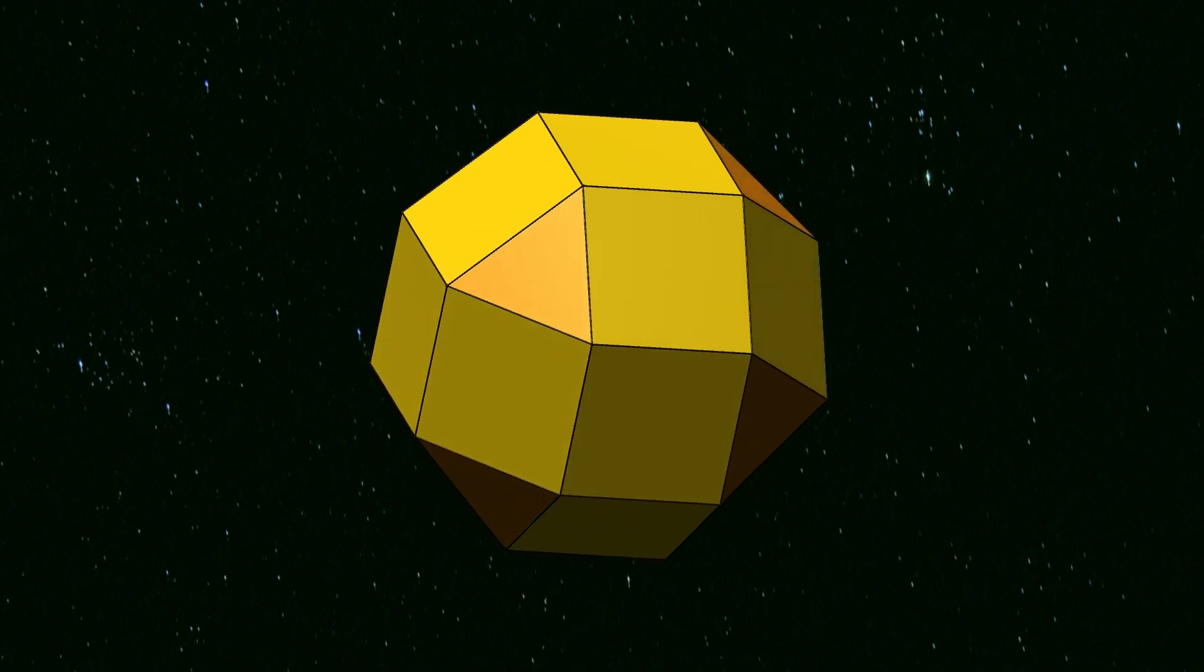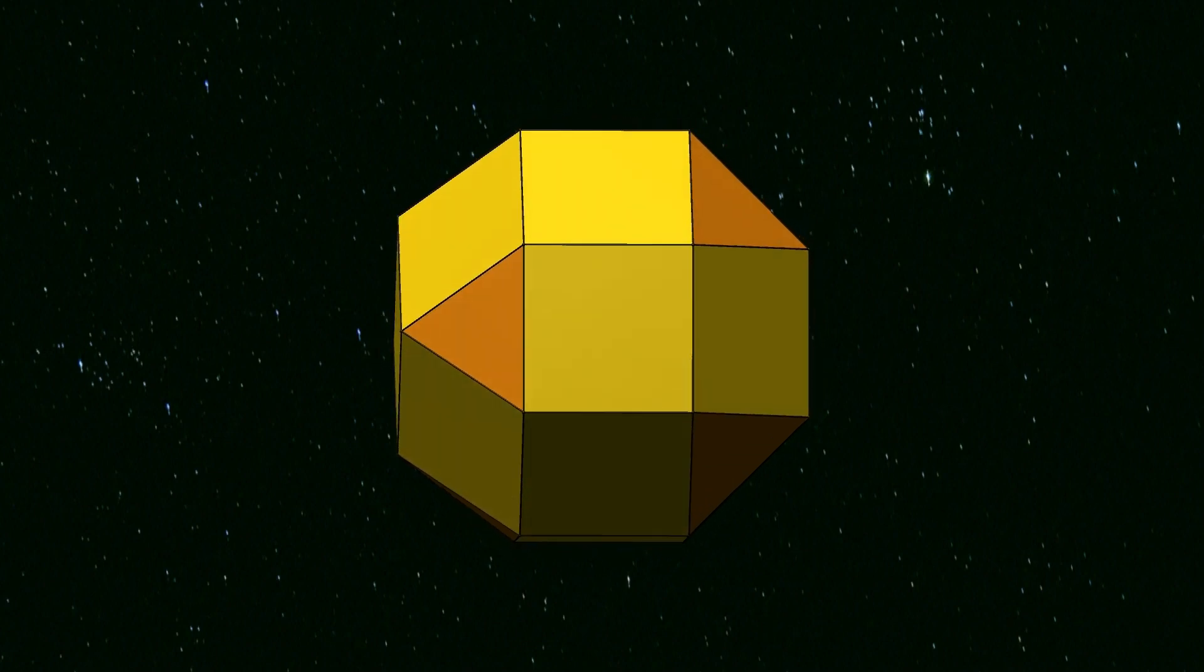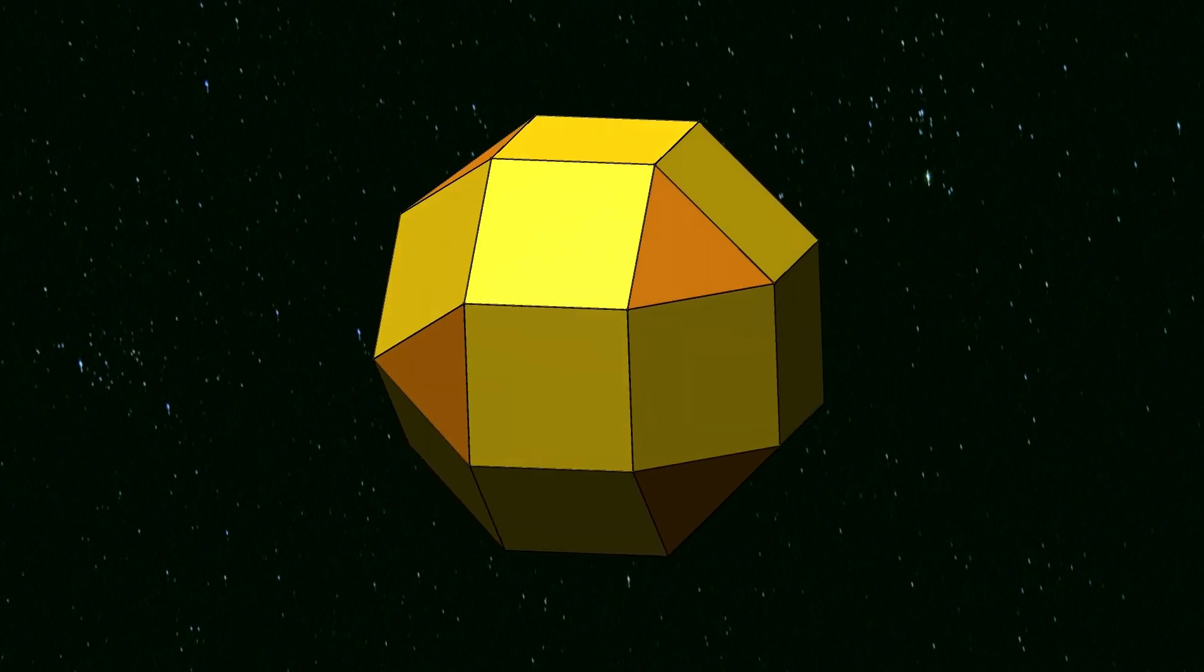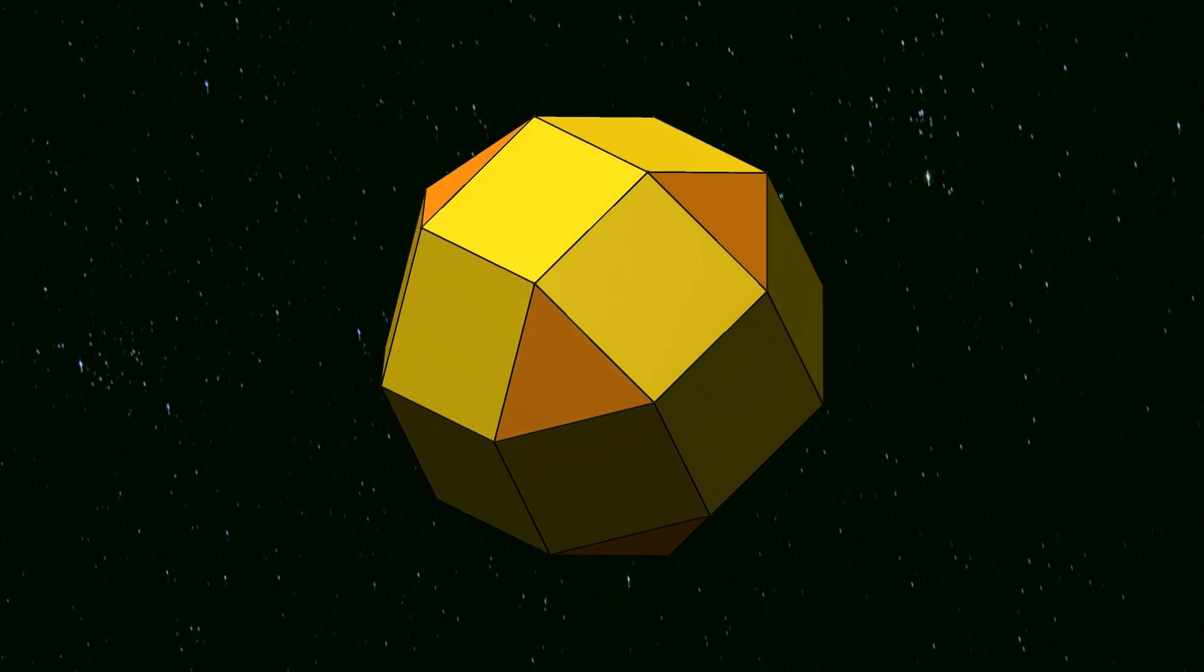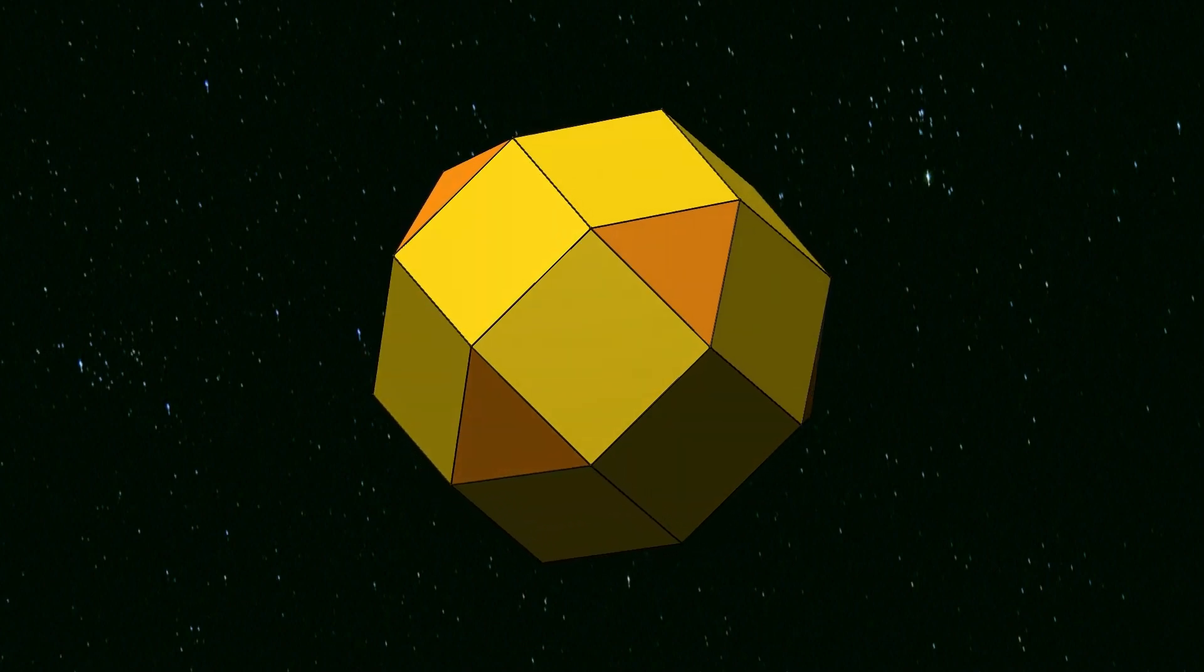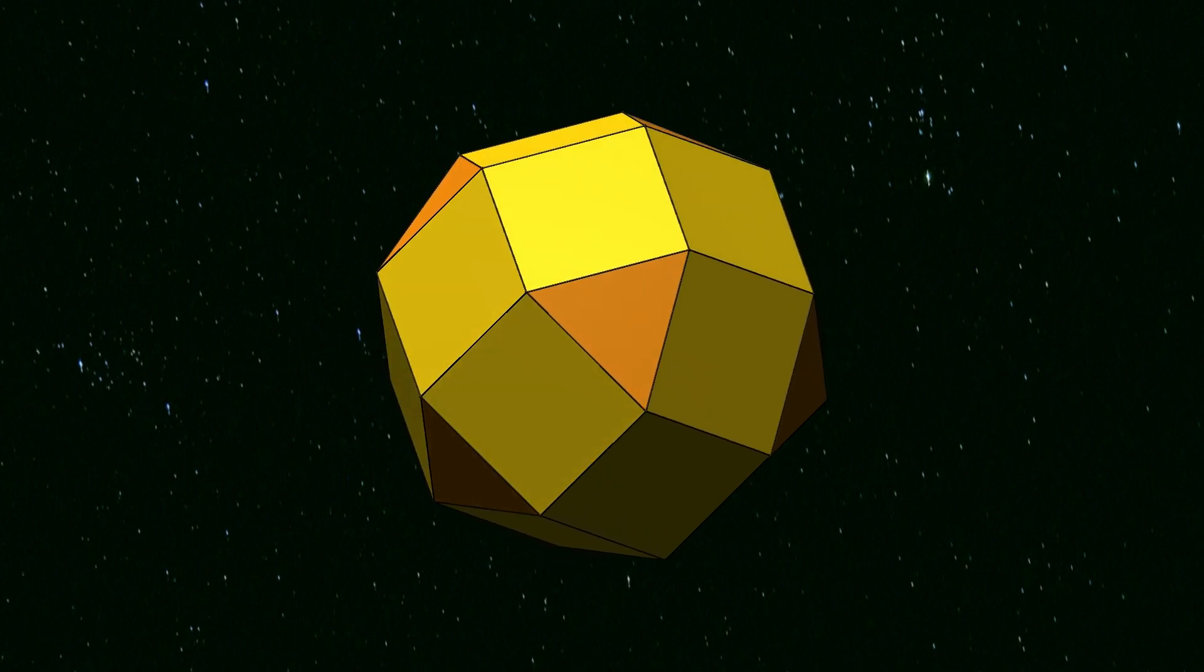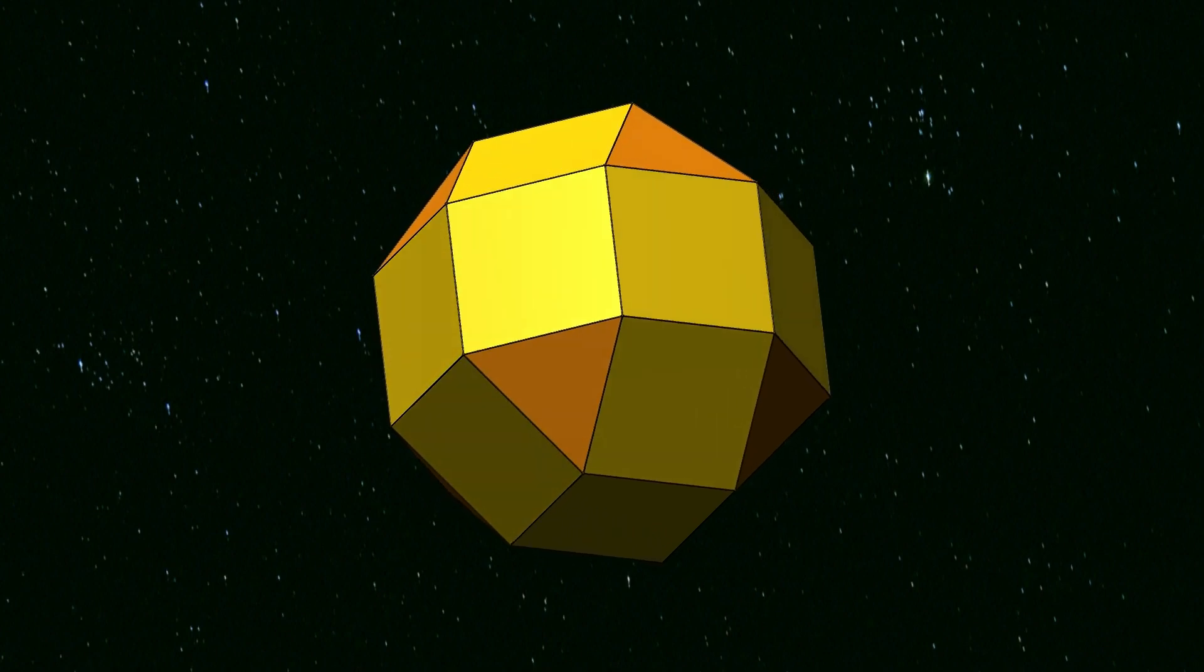Unfortunately, no, it isn't. The reason is that the requirement for similar vertices goes beyond the immediate surroundings of the vertices. To be called an Archimedean solid, the whole polyhedron must appear the same when viewed from each vertex.